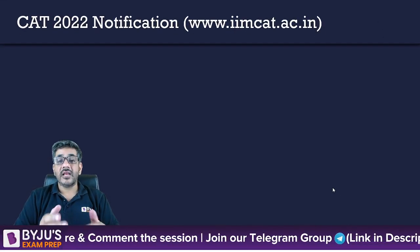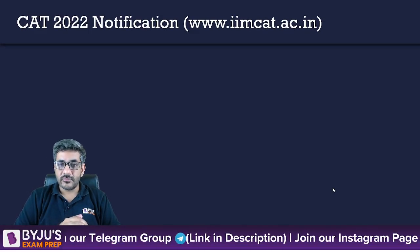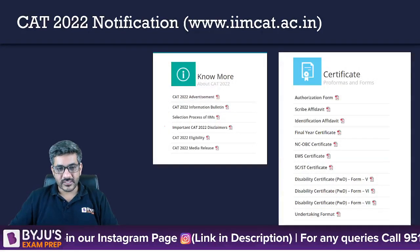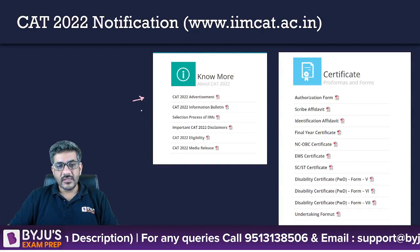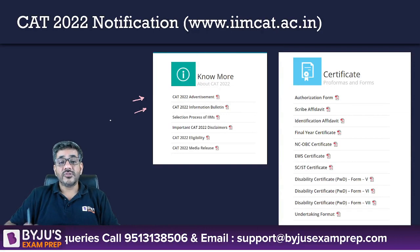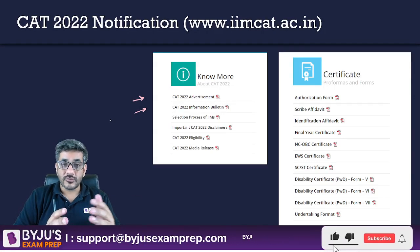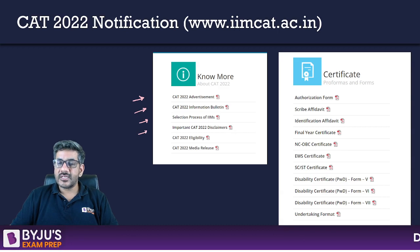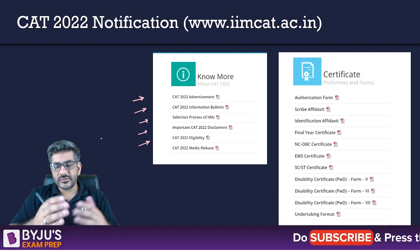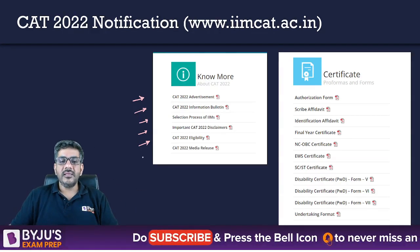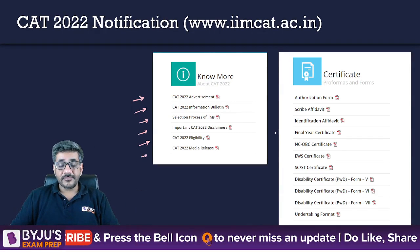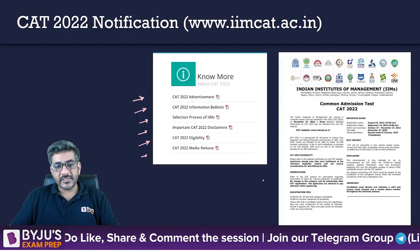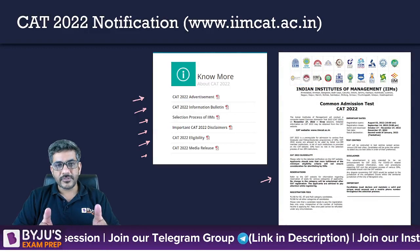To access the notification and a few more things, you have to go to the website www.iimcat.ac.in, where you will find a lot more things, as you can see on the screen. Not only the CAT advertisement would be there, it would also have the CAT 2022 information bulletin — which IIMs are there, the selection process, important disclaimers, everything about eligibility, the media release, and certificates for reservation.